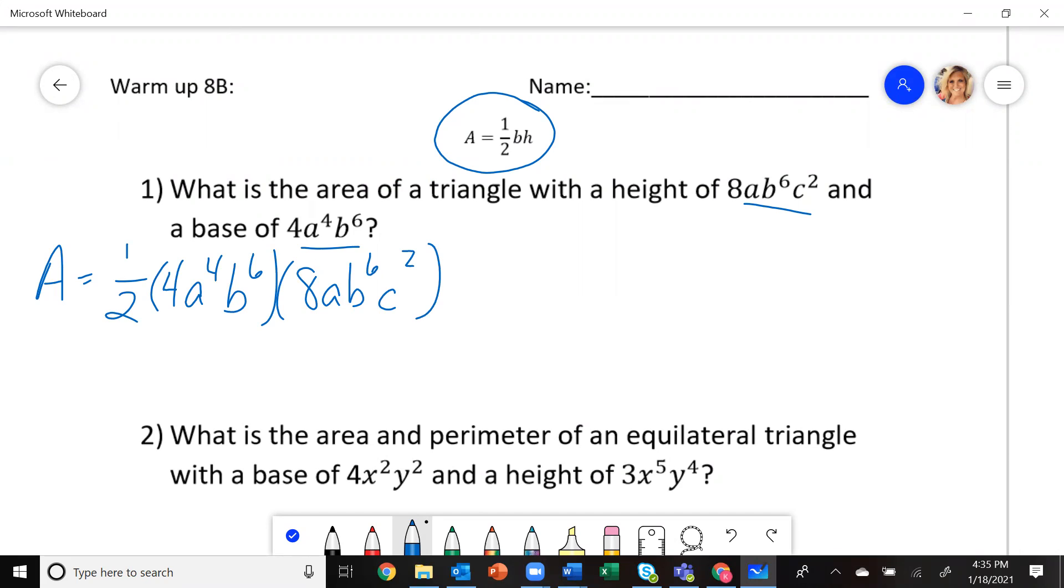To be able to solve this, we need to go through and multiply our coefficients. 1 half times 4, what's half of 4, which is 2? 2 times 8 gives you 16.